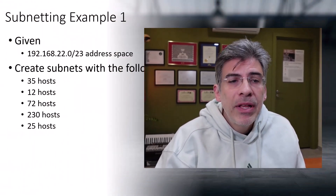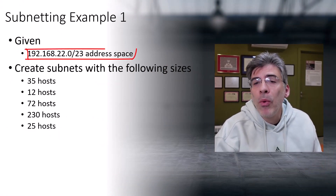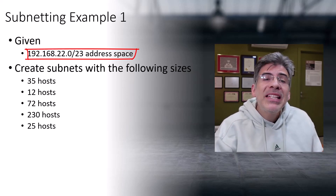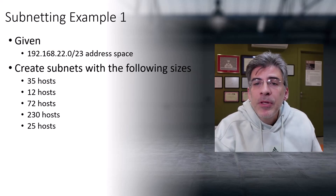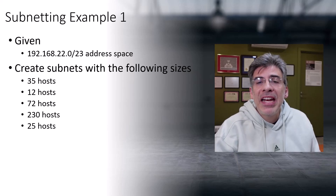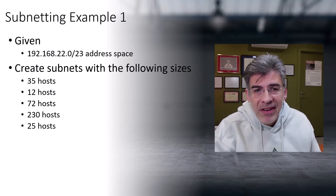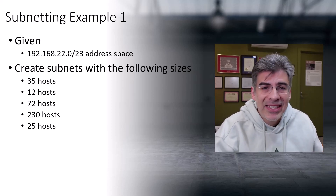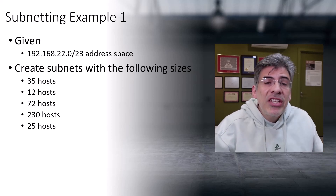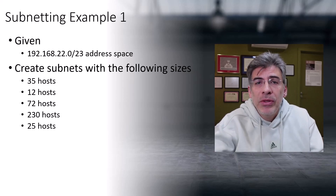For today's scenario, we are given an address space of 192.168.22.0/23. From this address space, we are asked to create multiple subnets of various sizes for an enterprise network. These subnets will have an expected number of hosts: one subnet with 35 hosts, another with 12, another with 72, another with 230, and another with 25. These are the actual physical devices the enterprise wants to connect into each subnet.